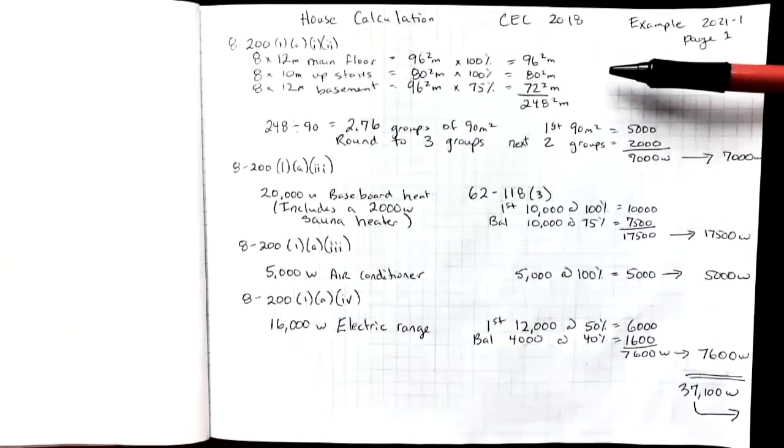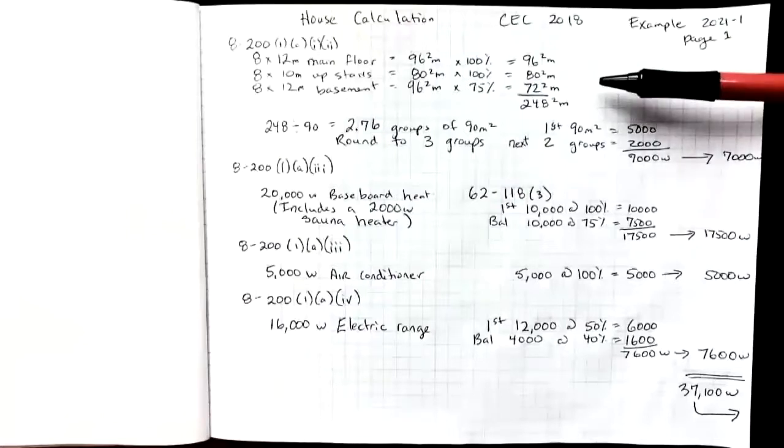Also we'll look at the ground wire size. Okay, so using rule 8-200, we're going to first find the demand for what's called our basic load using the area of the home.